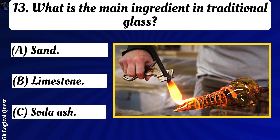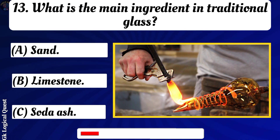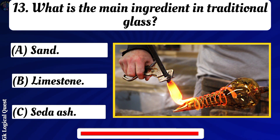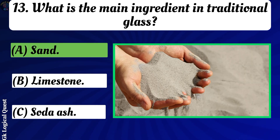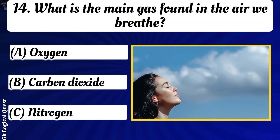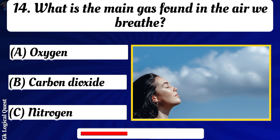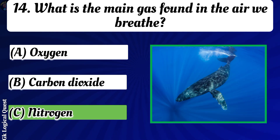What is the main ingredient in traditional glass? What is the main gas found in the air we breathe? Answer: Nitrogen.